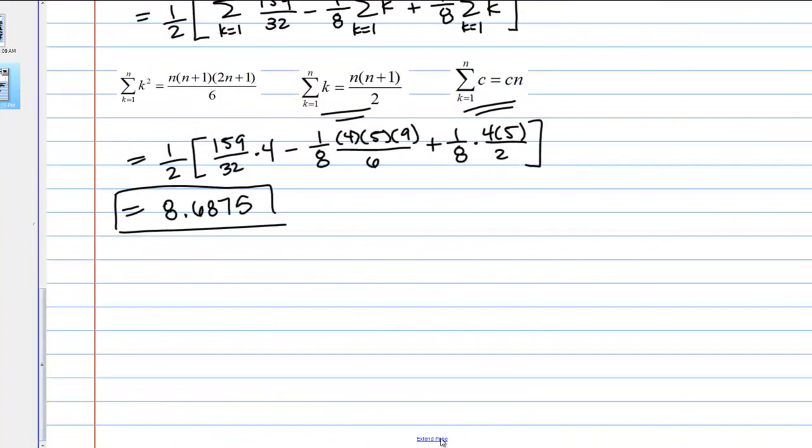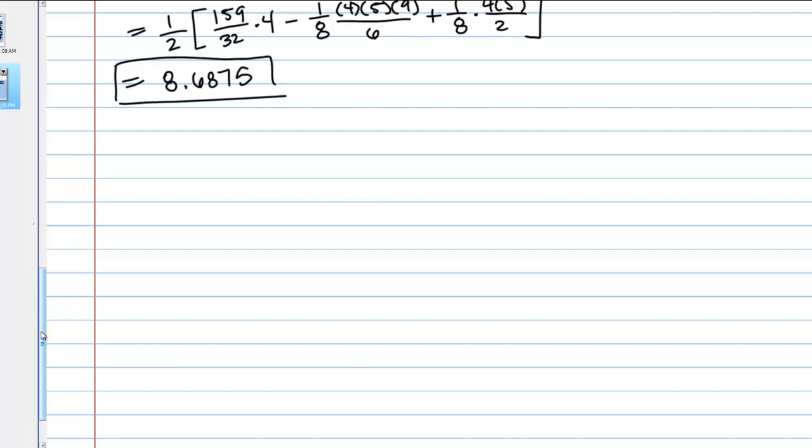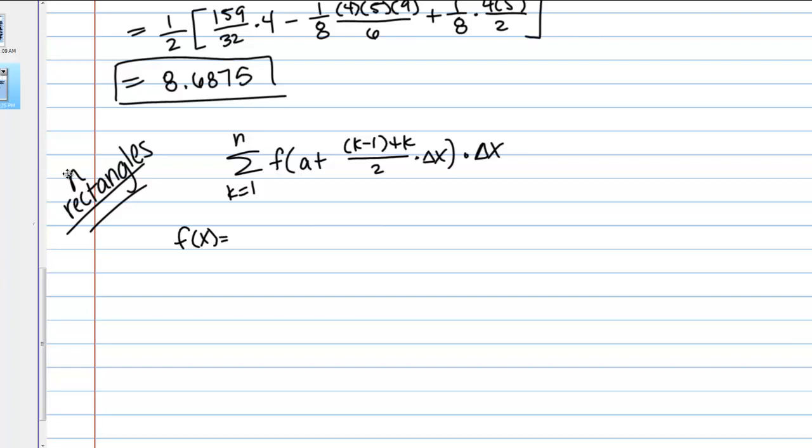Now, let's do this for just n rectangles in general. Just for n rectangles, I want to get a formula. We're going to use the same approach. Once again, the midpoint Riemann sum formula looks like this. F of A plus k minus 1 plus k over 2 times delta X. All that times delta X. My function was 5 minus 1/2 x squared, and my interval was from 0 to 2. This is going to be exactly the same process, except for doing it, instead of doing it for a number, N equals a number, I'm just going to keep N as a variable, as N.